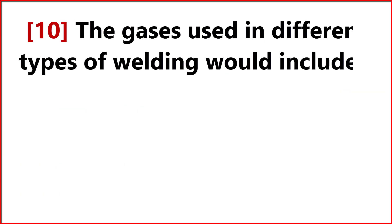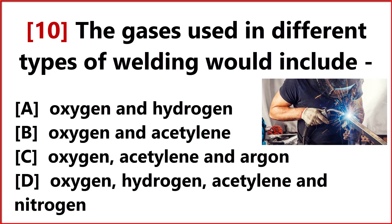The gases used in different types of welding would include? Option B. Oxygen and acetylene.